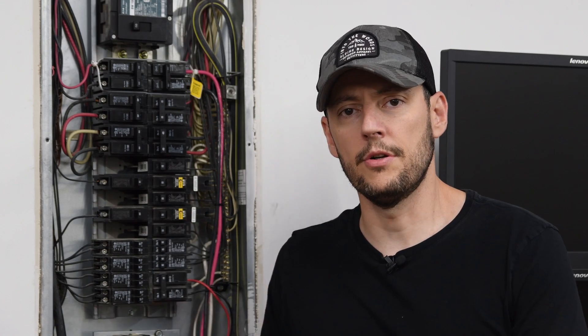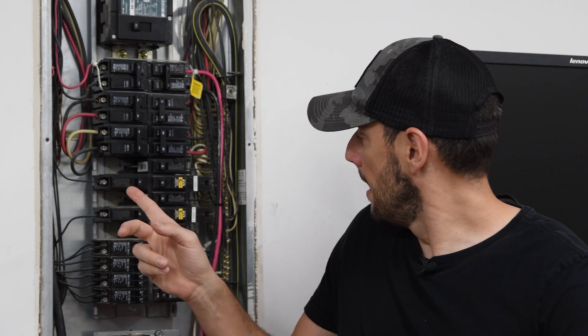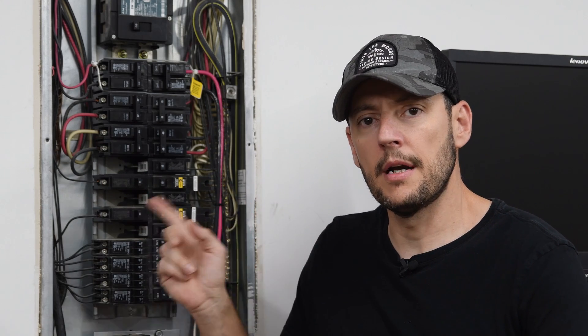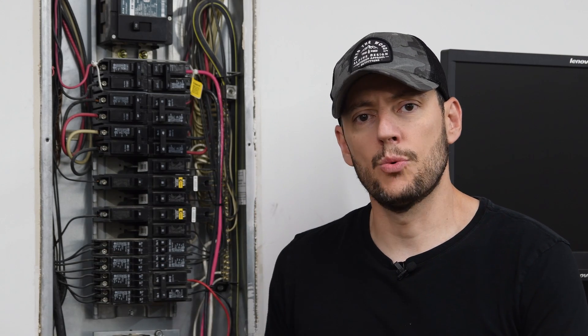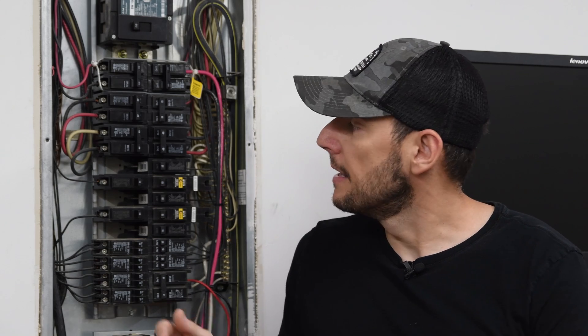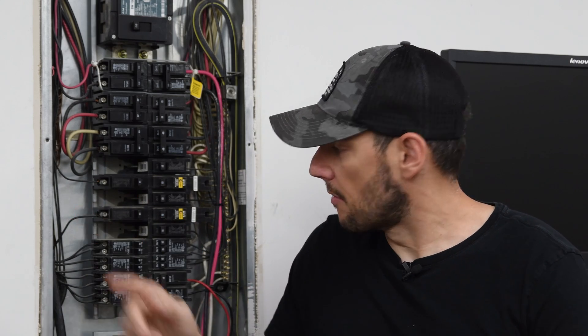If you look inside your breaker panel, you're going to see that the ground bar and the neutral bar are connected together. That is what is called a neutral bonded system, meaning that the neutral is bonded to the ground bar.